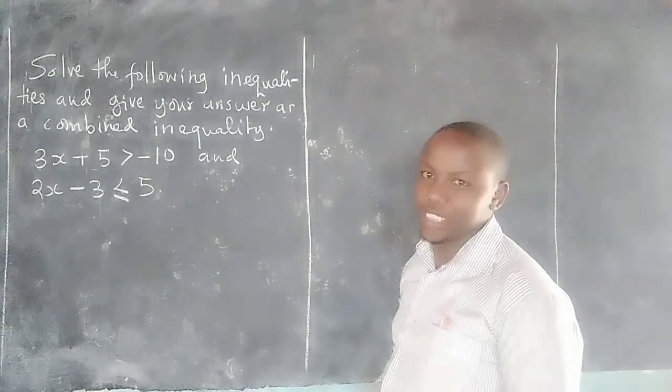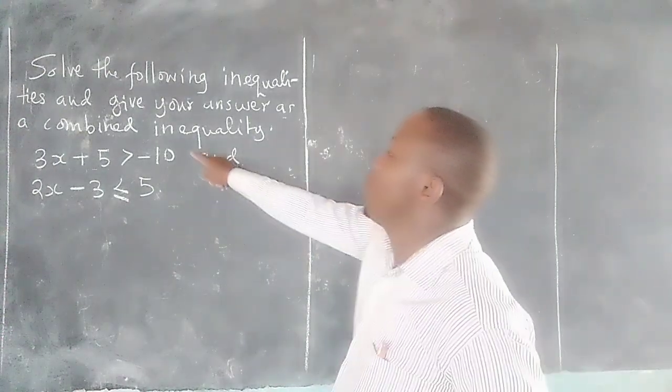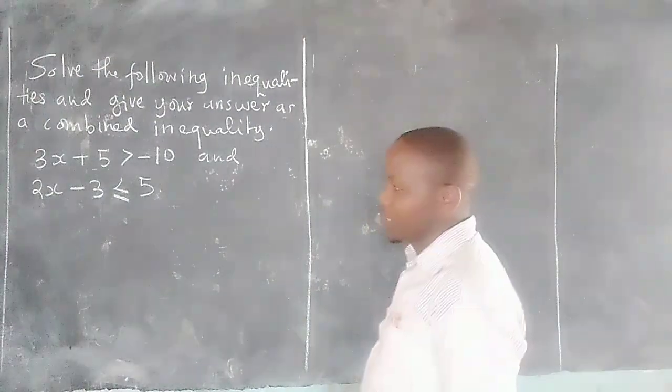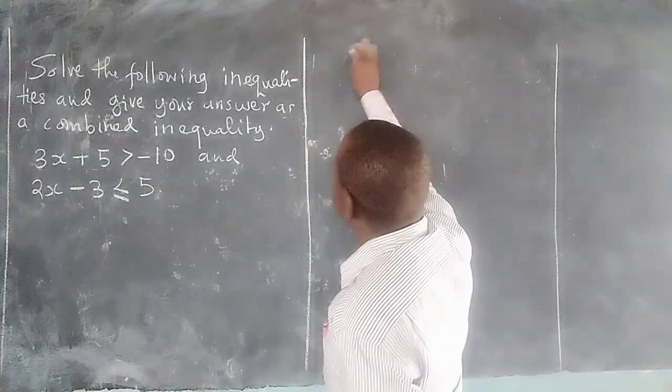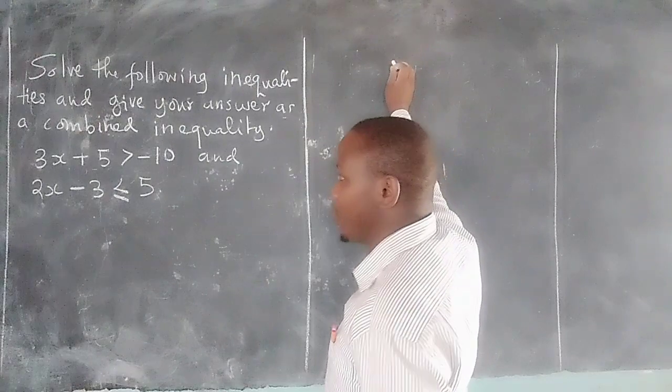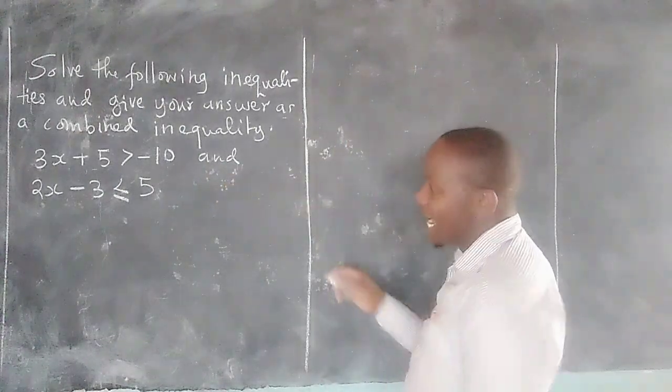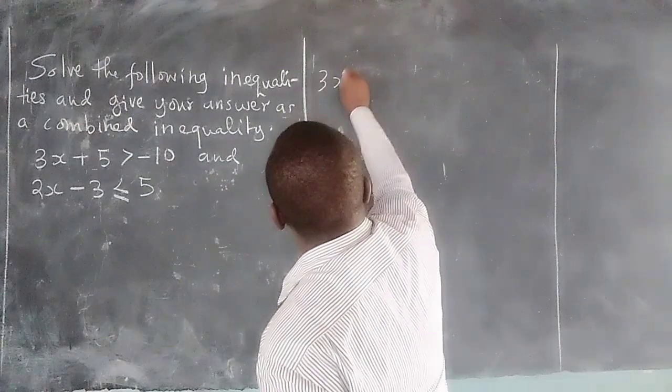For example, we can reduce the first compound statement into a simple statement by treating it as a normal linear equation yet it has an inequality symbol whereby we will say 3x + 5 greater than -10.